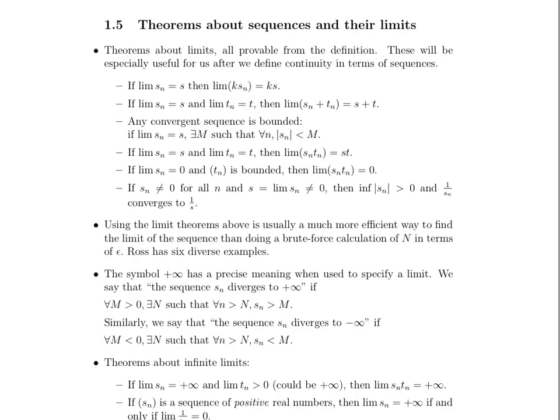If sₙ is not equal to 0 for all n, and s is the limit of sₙ and is also not equal to 0, then the infimum — the greatest lower bound — of the absolute value of sₙ is greater than 0, and 1 over sₙ converges to 1 over s. The infimum is the greatest element that is less than or equal to all elements of the set, and it does not necessarily have to be a member of the set. It is the opposite of the least upper bound.